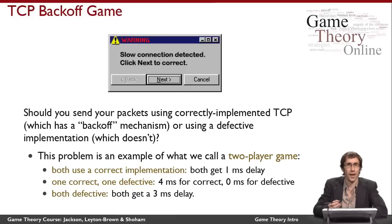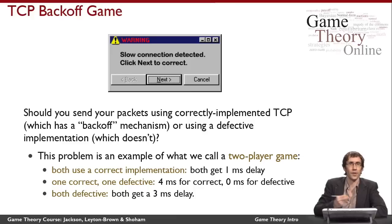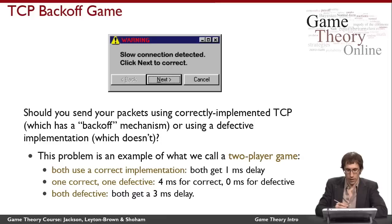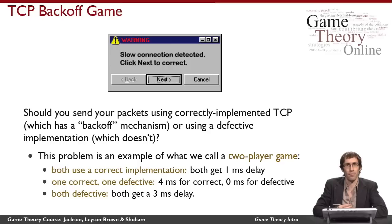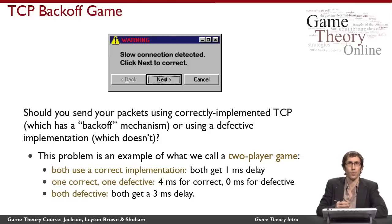When both players use correct implementations, they both experience a delay of one millisecond. If one person uses a correct implementation and the other uses a defective one, the person with the defective implementation floods the network with packets, causing the other person to back off heavily, experiencing a much longer delay, while the defective user gets their packets through virtually immediately. If both people use defective implementations, they're in a symmetric situation but both experience a bigger delay than before, because there's now a greater chance their packets will be lost.